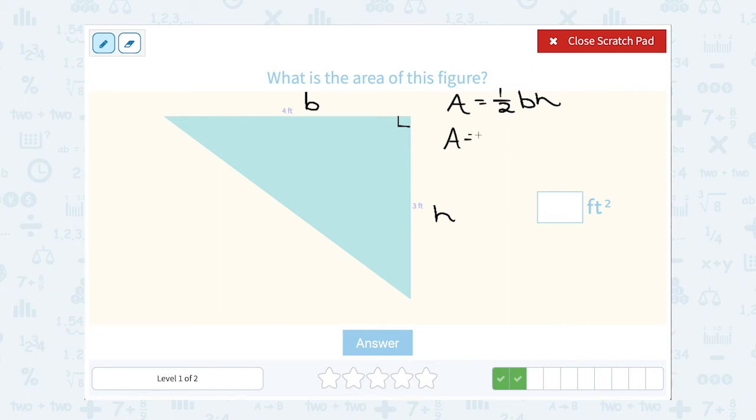So area is equal to one half. In place of the b let's put four. And our height was three. So my area is one half four times three or one half of 12. Well half of 12 or 12 divided by 2 is going to give me 6. So the area would be 6 feet squared.